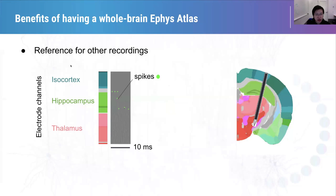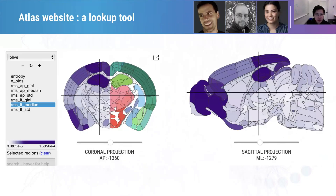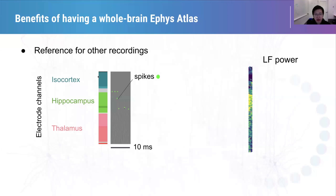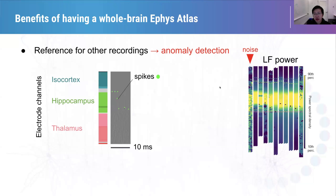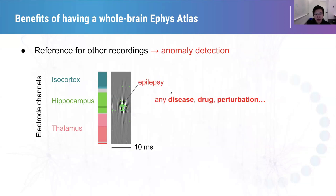Why is such an atlas of electrophysiology useful? First, it can help us generate a reference for other EFACE recordings. For example, in a typical recording, we can compare our recording data to the atlas to enable us to detect any anomaly. For example, we find that during disease, a certain EFACE feature may be strongly modified in certain brain regions such as the hippocampus, and such an atlas will enable us to identify those disease features.